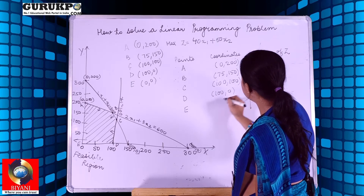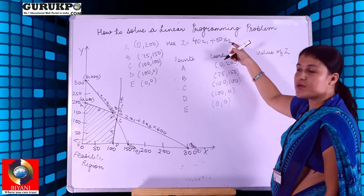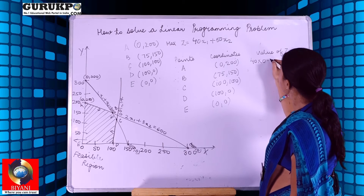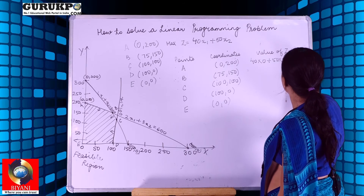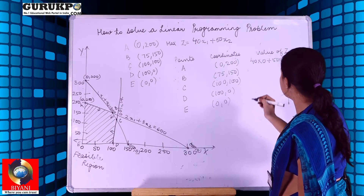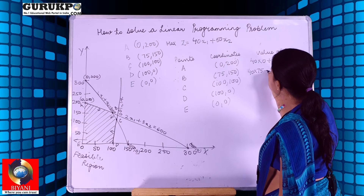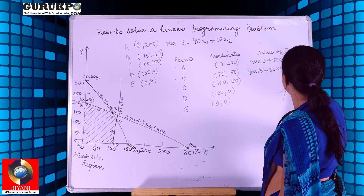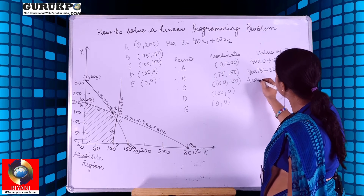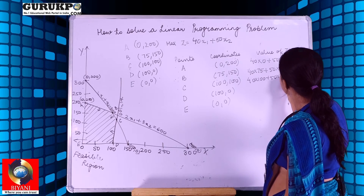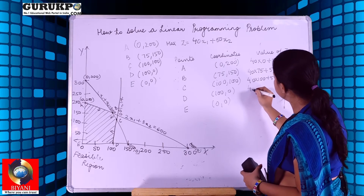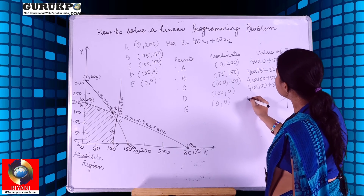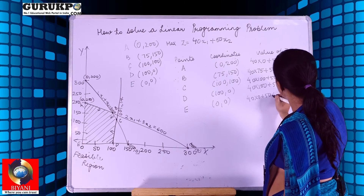The maximization objective function is 40x1 + 50x2. Substituting each point: For A (0, 200): 40(0) + 50(200) = 10,000. For B (75, 150): 40(75) + 50(150) = 10,500. For C (100, 100): 40(100) + 50(100) = 9,000. For D (100, 0): 40(100) + 50(0) = 4,000. For E (0, 0): 40(0) + 50(0) = 0.